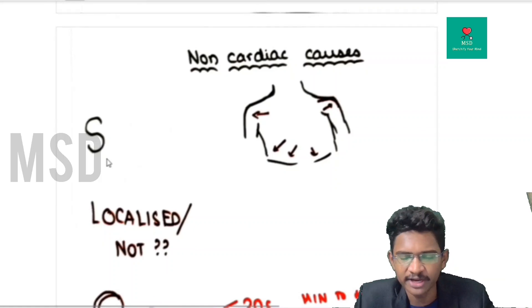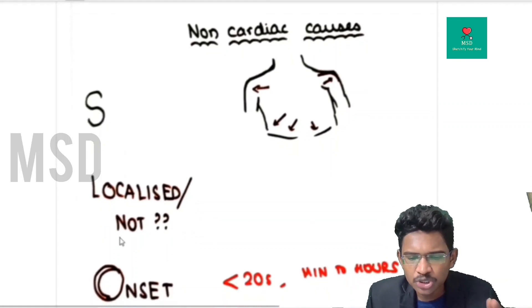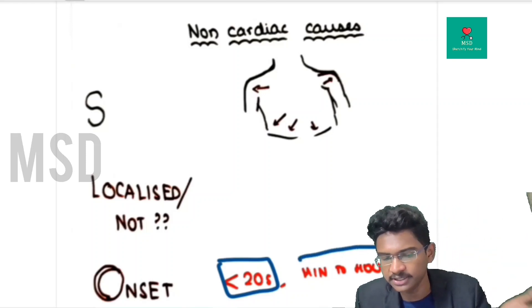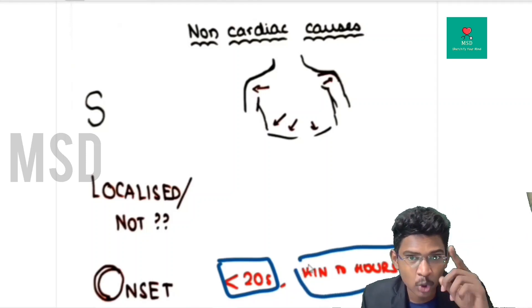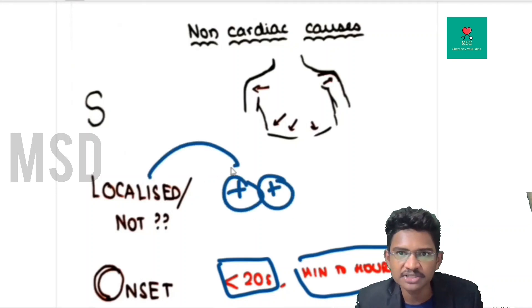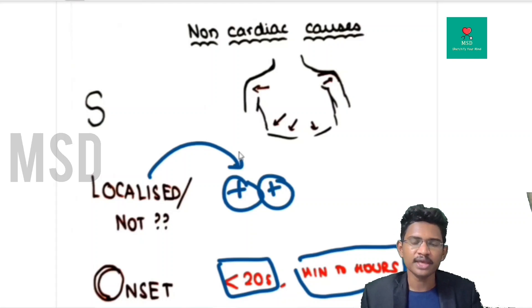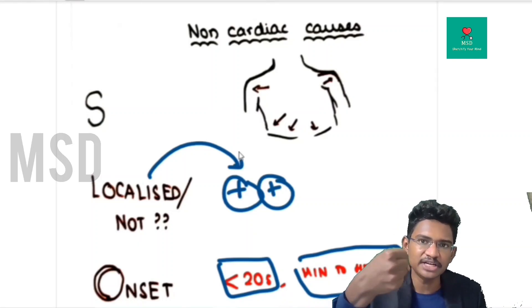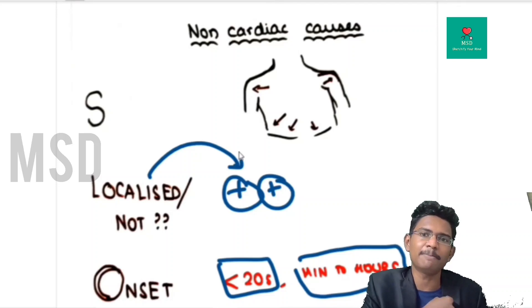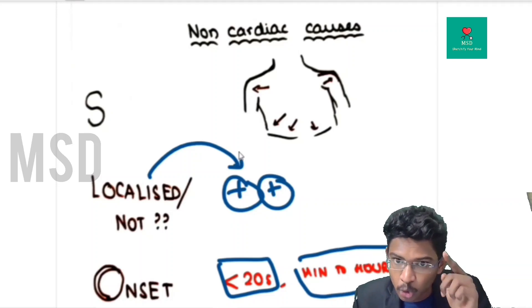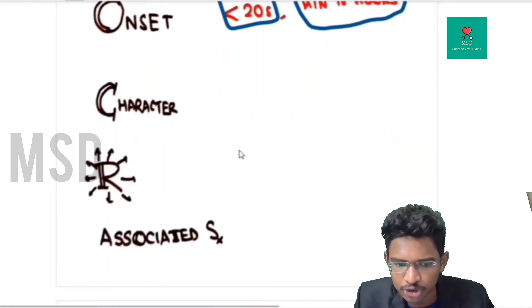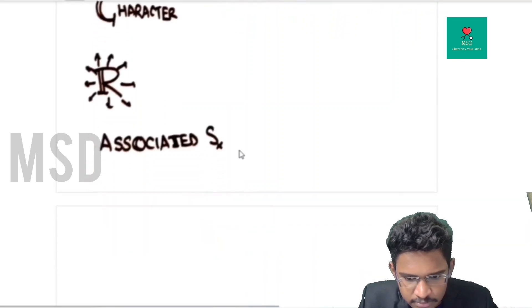For non-cardiac causes of chest pain: these pains last less than 20 seconds or for hours to days. They can be well localized, unlike MI pain, which is diffuse — patients typically place a clenched fist to the center of the chest. In non-cardiac causes, patients can localize the pain precisely.